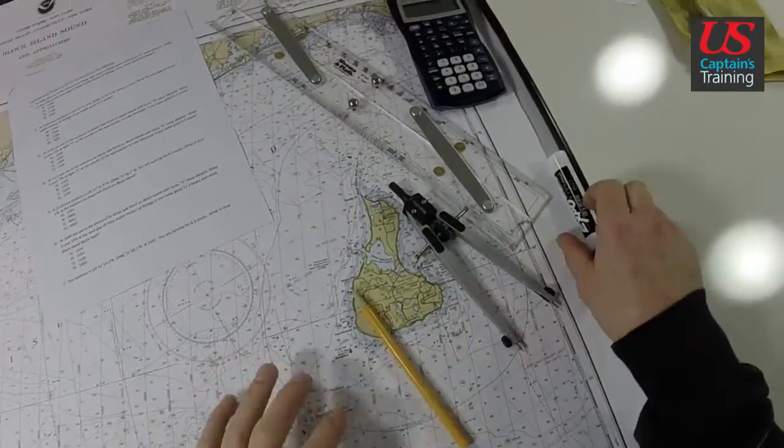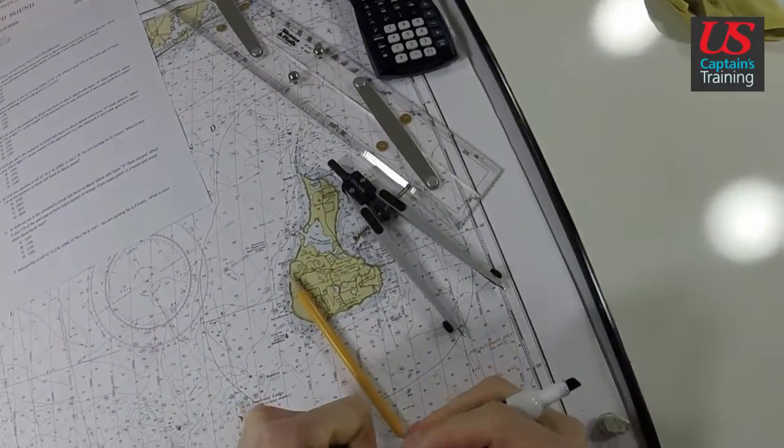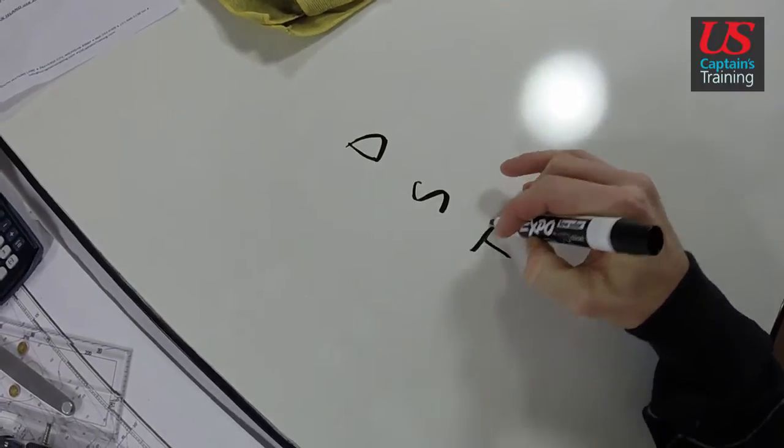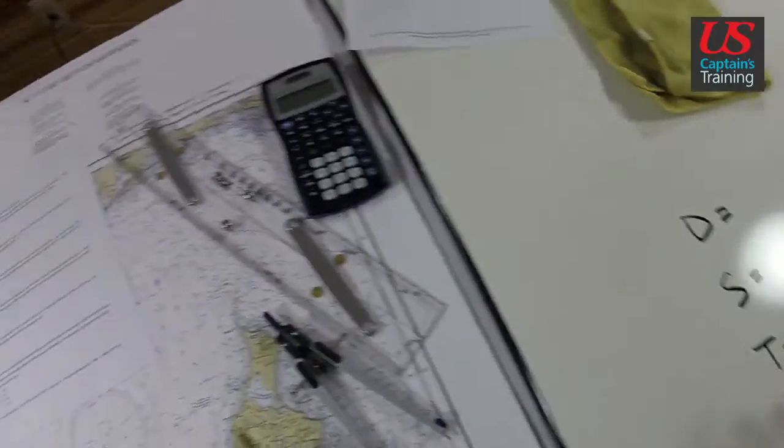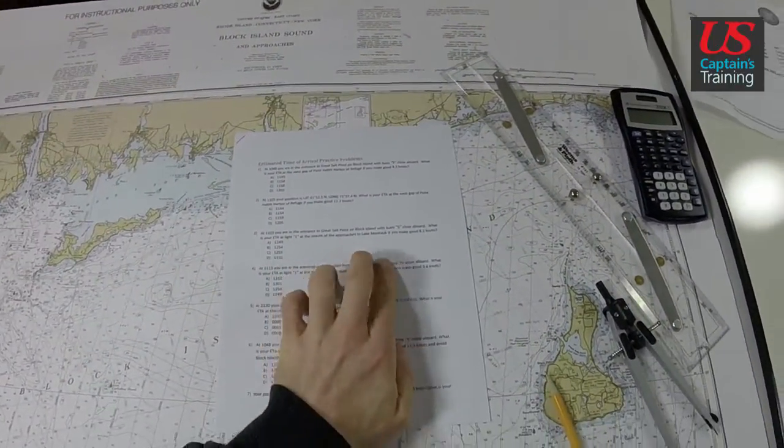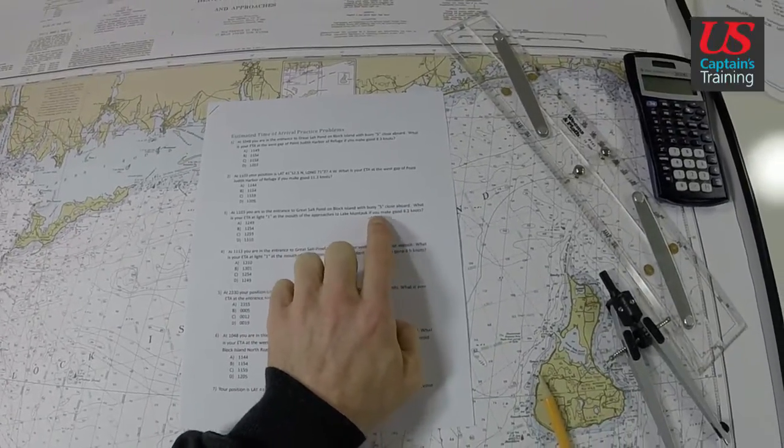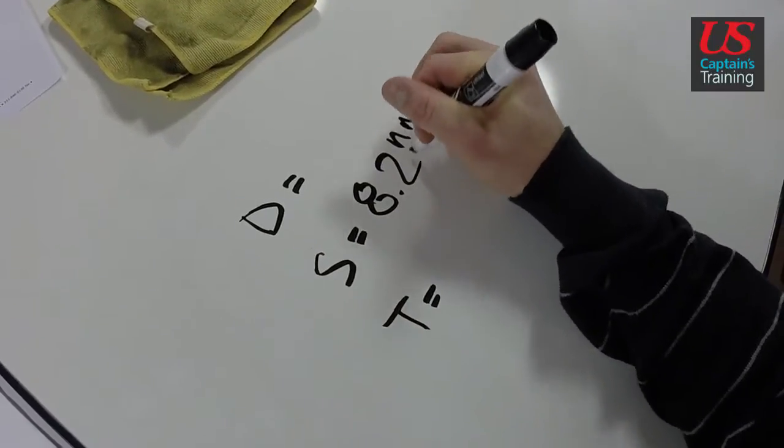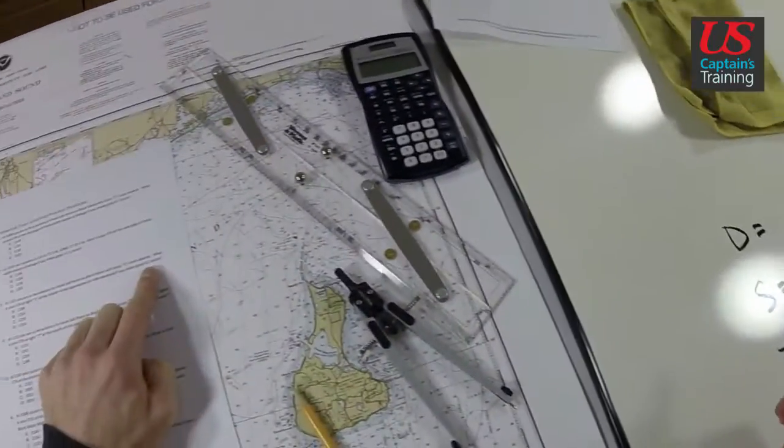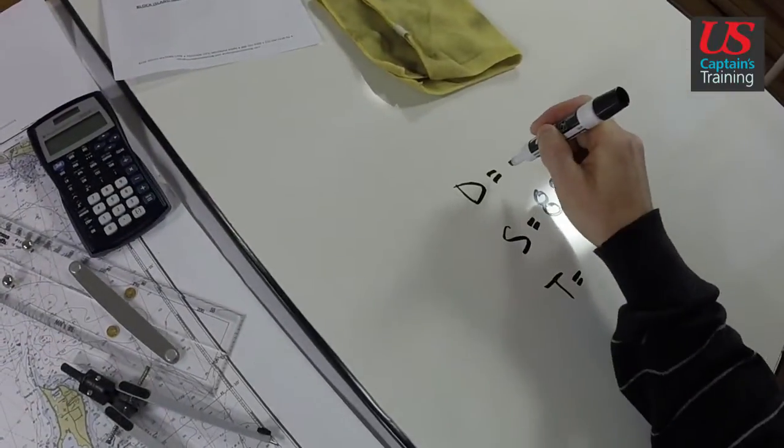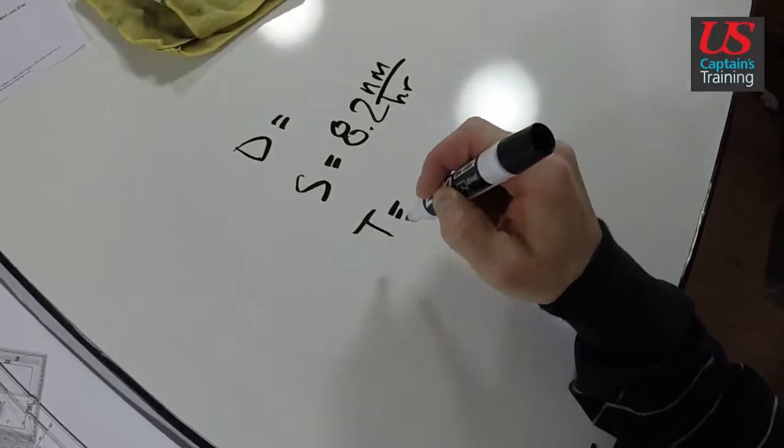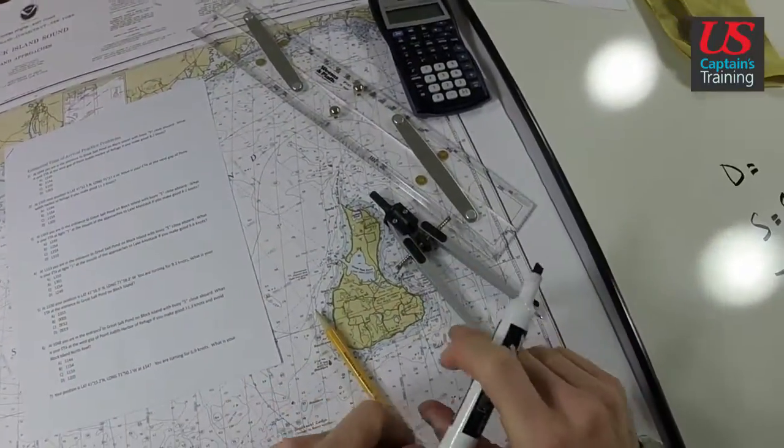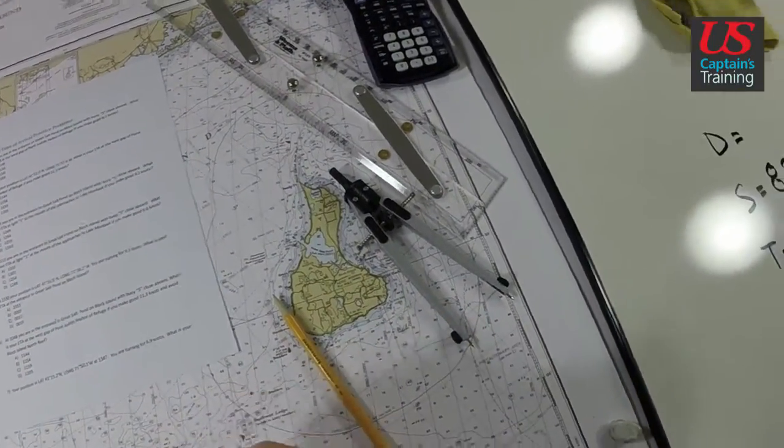This is an ETA problem. We're going to have a distance, a speed, and a time - these are the three factors we'll be working with. It gives us our speed: 8.2 knots, which is 8.2 nautical miles per hour. We can get a distance, and with speed and distance we can get a time. Then we can manipulate that time and add it to the time we left to get our estimated time of arrival.